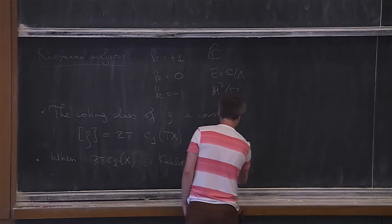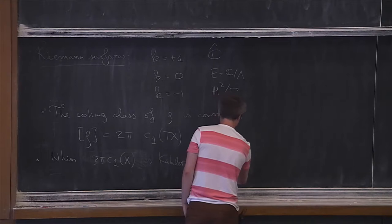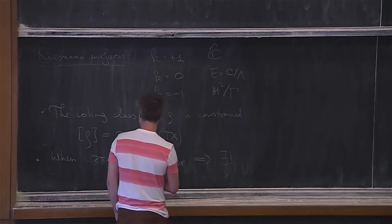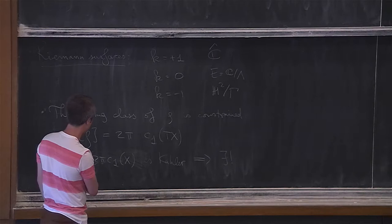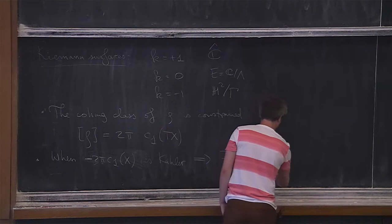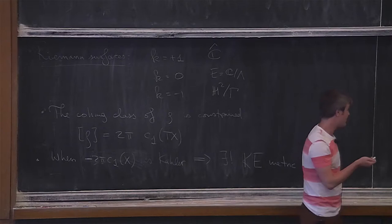When 2 pi c_1(X) is Kähler, there exists an essentially unique Kähler-Einstein metric of negative curvature. This corresponds to the unique metric of negative curvature on a Riemann surface, and you have this on typical surfaces of general type. But when X is K3, the only thing you can take is k equals 0.